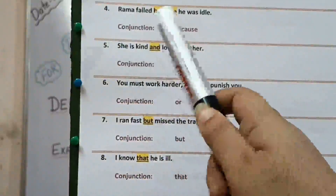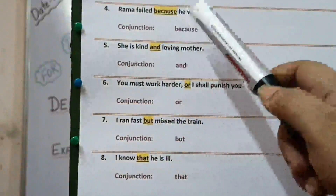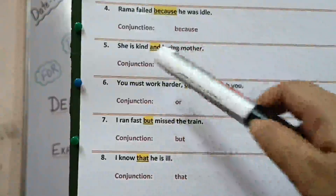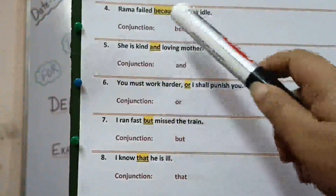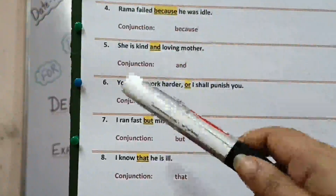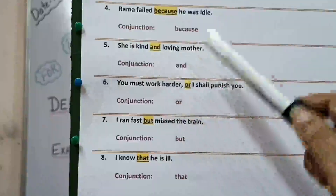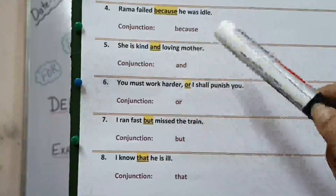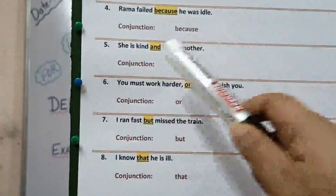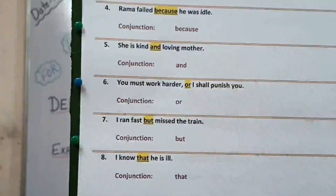Rama failed because he was idle. Here there is a reason given by using 'because', so 'because' is the conjunction. Fifth: she is kind and loving mother. Here 'and' is used when similar sentences are being used, so 'and' is the conjunction.